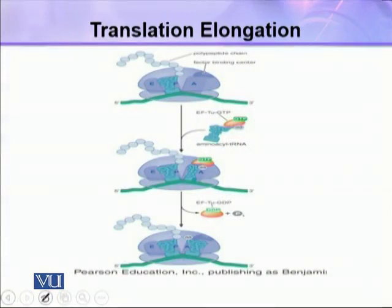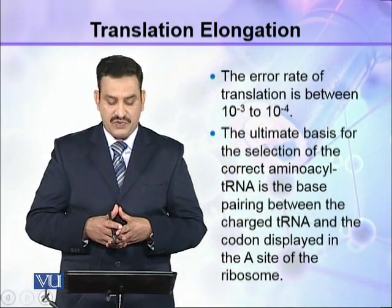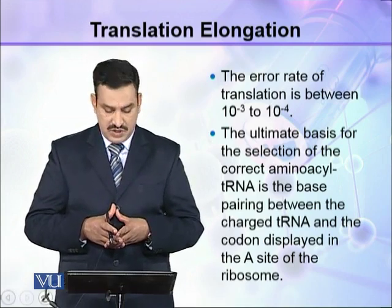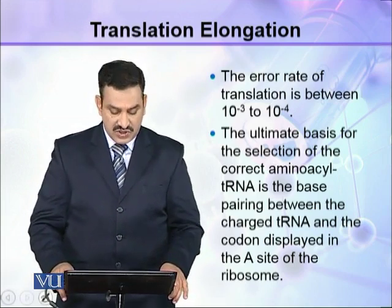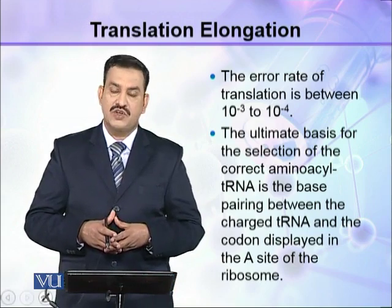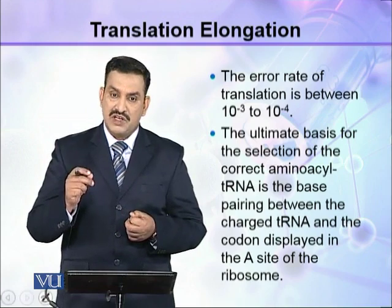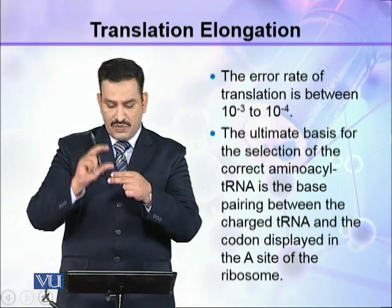In this diagram, you can see the ribosome with its A-site free. The aminoacyl tRNA, together with EF-TU factor and GTP, will bind to the A-site. A mismatch cannot bind there — this mainly depends on the base pairing between the mRNA codon and the tRNA anticodon.